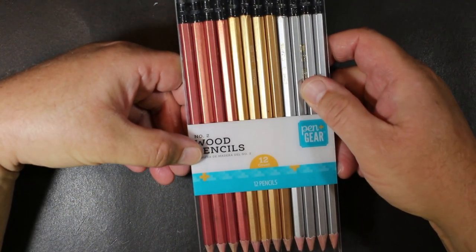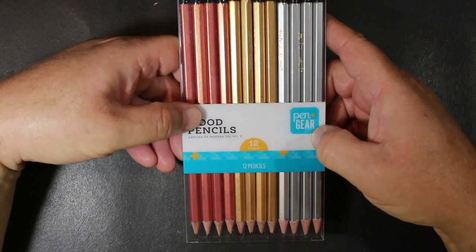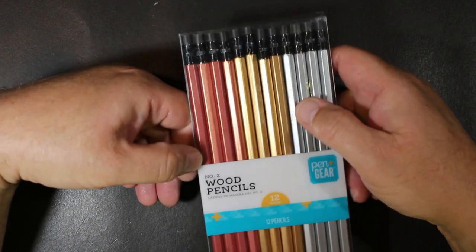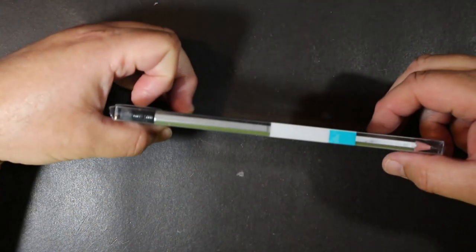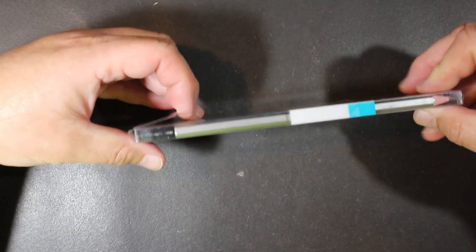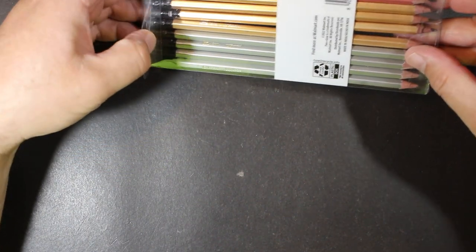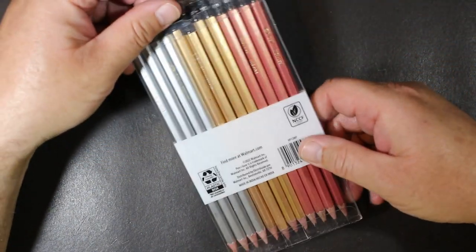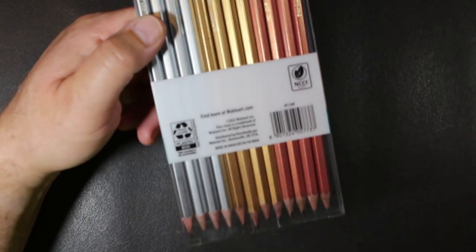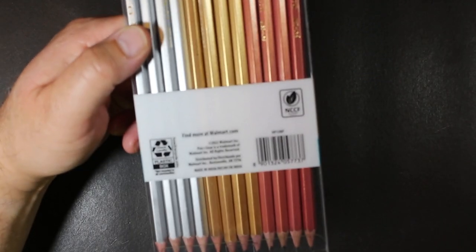There's four of each. Number two wood pencils, 12 count, pen and gear. And they're in this plastic case. We can look on the back for some additional details here.